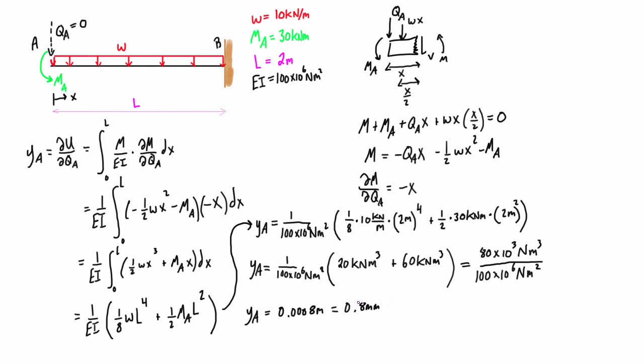You'll notice that is a positive value and it's going downwards. The reason this is positive is because it's going in the direction of QA that we defined to be going downwards.